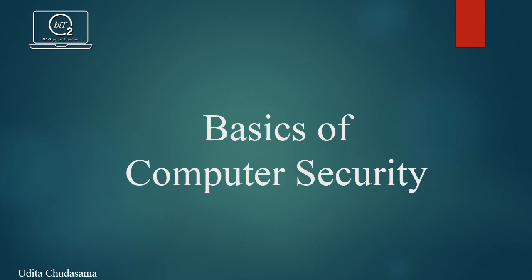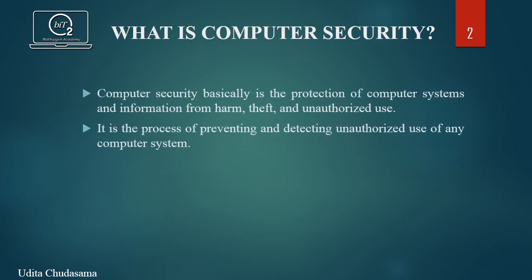Let us get started by discussing what is computer security. Computer security means protecting the computer systems and also the information stored in the computer from any harm, threat, and unauthorized use. Computer security is generally termed as the process of preventing and detecting unauthorized use of the computer system. To achieve this security system, we have a simple and widely applicable security model called the CIA triad.